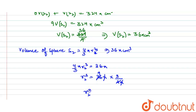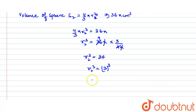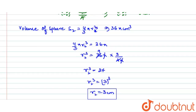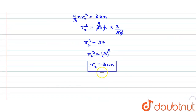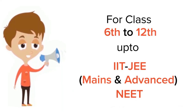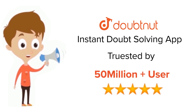So r₂³ = 27, and since 27 = 3³, by comparing we get r₂ = 3 centimeters. This r₂ is the radius of the smaller sphere, which is what we had to find. For class 6 to 12, IIT JEE and NEET level problems, trusted by more than 5 crore students — download DoubtNet today.